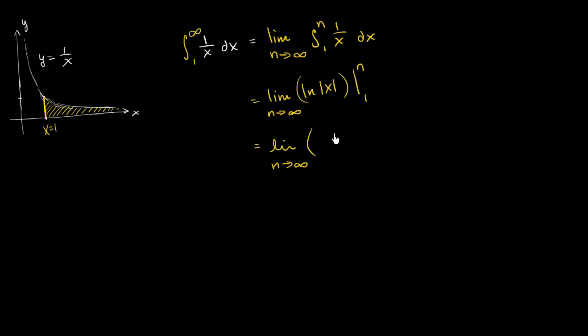You evaluate this at n. So you get the natural log of n (we know n is positive) minus the natural log of 1. Natural log of 1 is just 0. e to the 0th power equals 1. So this boils down to the limit as n approaches infinity of the natural log of n.